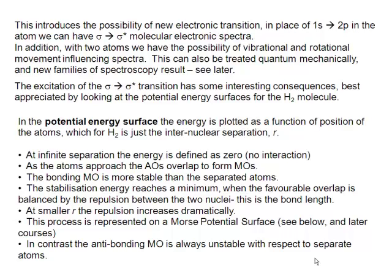If we build up a potential energy surface — looking at the total energy of the system as a function of the separation of the two atoms, for the particularly simple case of a diatomic molecule — we usually start with our atoms at some nominal, infinite distance apart. If they're infinitely far apart, then there's no interaction between them, and we call that interaction energy, the potential of the total system, zero.